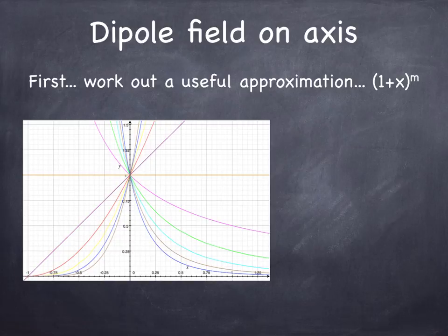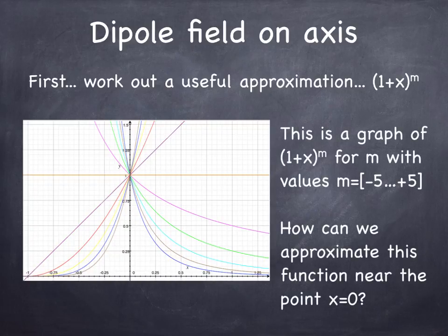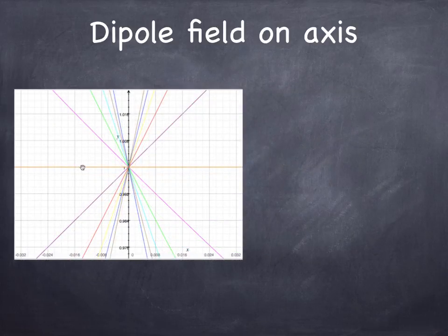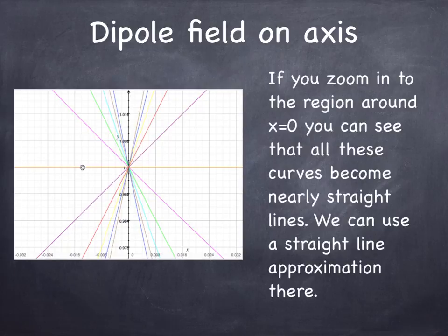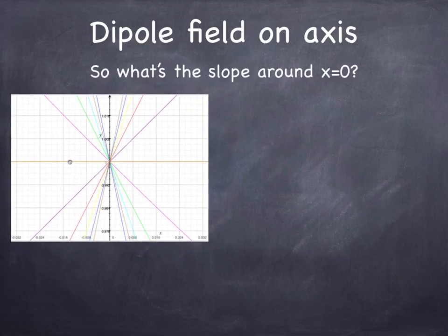So if you graph 1 plus x to the m, you get a whole family of curves depending on the value of m. Here's a set of curves where m goes from negative 5 to plus 5. You can see they're kind of all over the place. But if you zoom in to the origin, you'll notice that they all look like straight lines. So there's hope that we could write a simple approximation, a straight line equation for these guys.